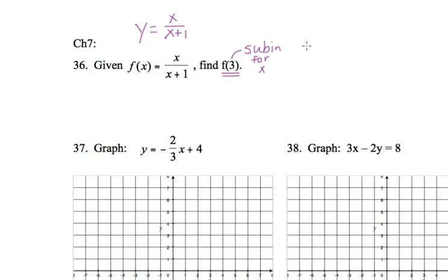So this becomes 3 over 3 plus 1, which is 3 over 4, 3 fourths. So f of 3 means put 3 into our equation for x and that gives us 3 fourths.